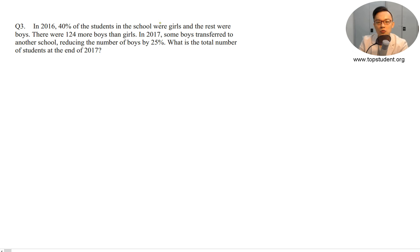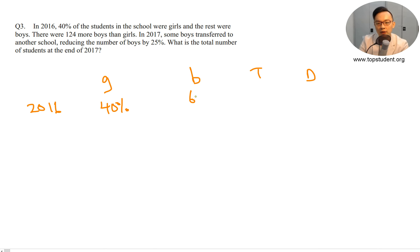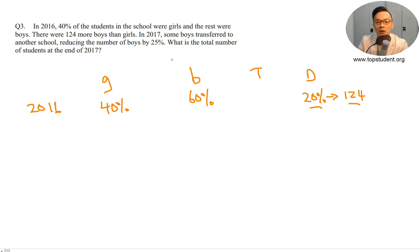In 2016, 40% of the students in the school were girls. The rest were boys, and there were 124 more boys than girls. So I create my mathematical structure with girls and boys. Girls are 40%, boys are 60%. The difference is 60 minus 40, which is 20%, and they told me it's 124. So 20% is equivalent to 124.